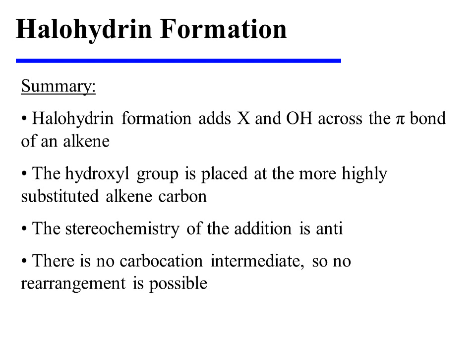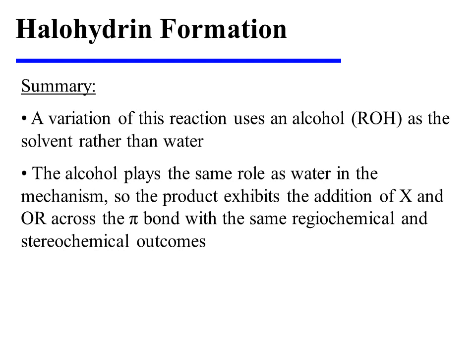In summary, halohydrin formation adds a halogen and a hydroxyl group across the pi bond of an alkene. The hydroxyl group is placed at the more highly substituted carbon of what was once the alkene. The stereochemistry of the addition is anti, and since there is no carbocation intermediate in this reaction, no rearrangement is possible. It's also worth noting that a variation of this reaction uses an alcohol as the solvent rather than water. In this situation, the alcohol plays the exact same role as water in the mechanism, but the product will exhibit the addition of a halogen and an alkoxy group, or OR group, across the pi bond. The regiochemical and stereochemical outcomes will be the same as when water was used as the solvent.